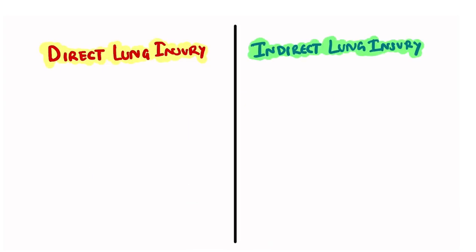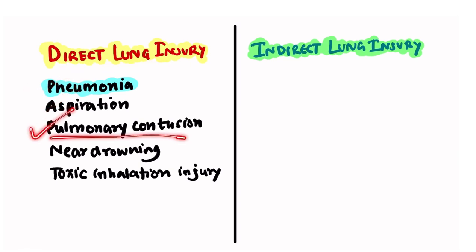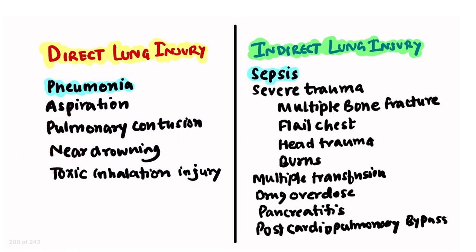ARDS can result from direct or indirect lung injury. Direct lung injury can be caused by pneumonia, aspiration of gastric content, pulmonary contusion, near drowning, and toxic inhalation injury — with pneumonia being the most important cause.